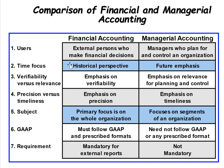Financial accounting is historical — we record things happening in the business and put out a report of the past: what happened last month, last quarter, last year. In managerial accounting, our focus is really on the future. We take information, make projections, and look at what's going to happen going forward — and what we can do to make our company more profitable and successful.